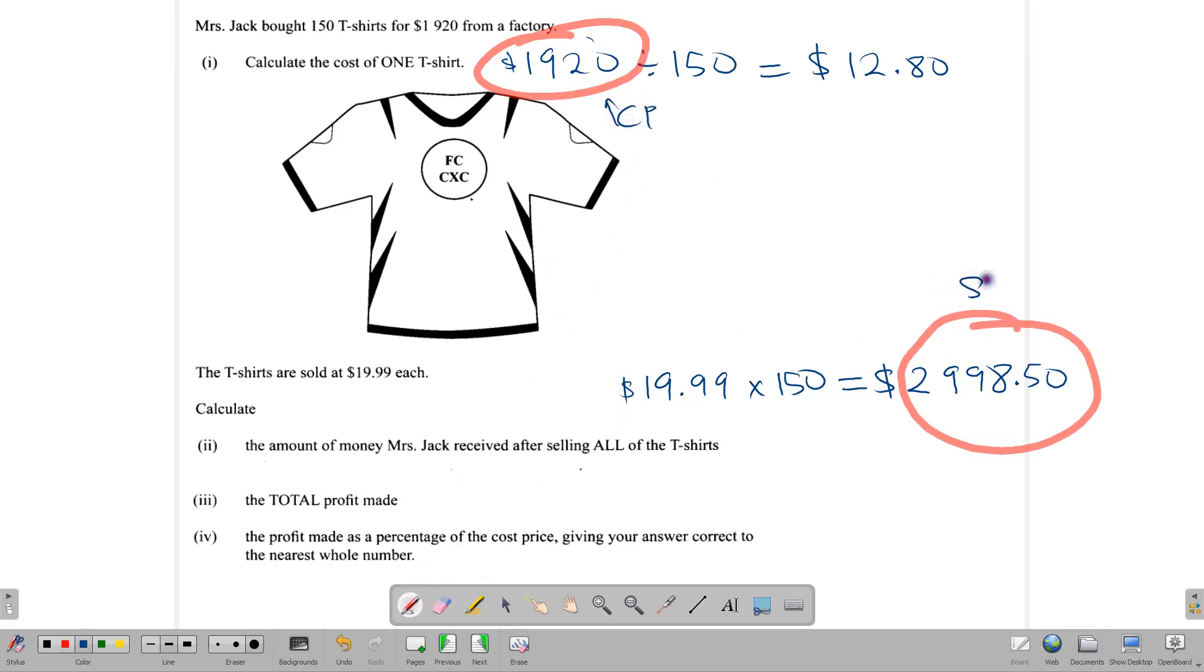And so our profit is going to be the difference between our cost price and our selling price, which is $2,998.50 minus $1,920, which gives us a total of $1,078.50.